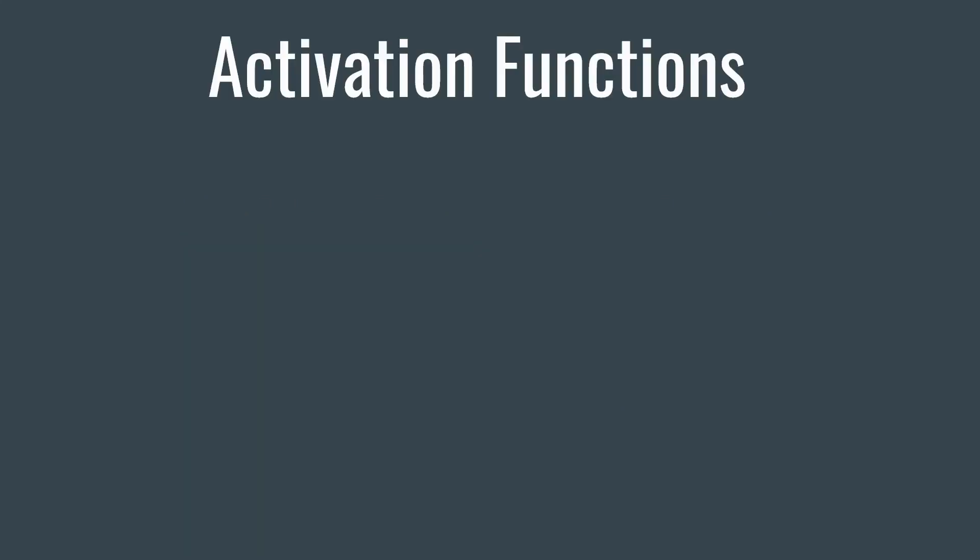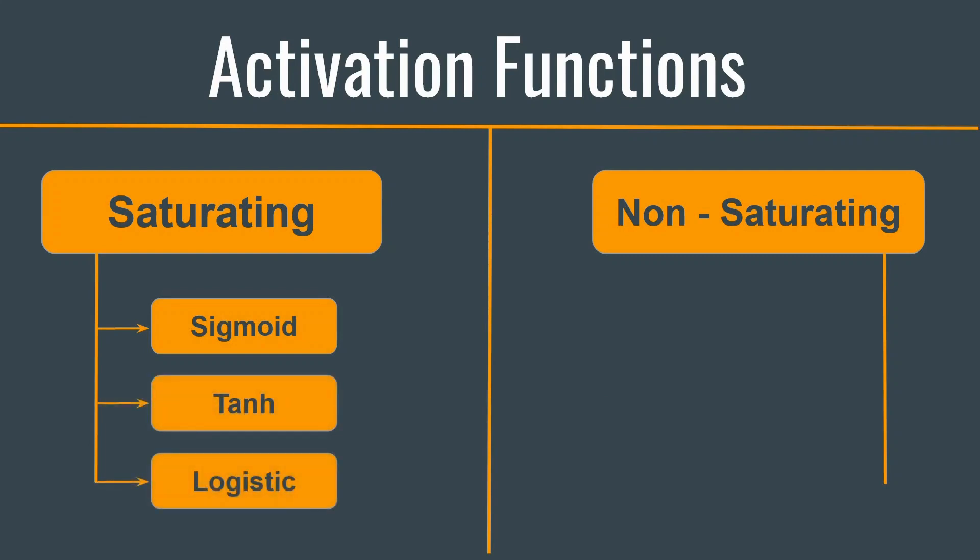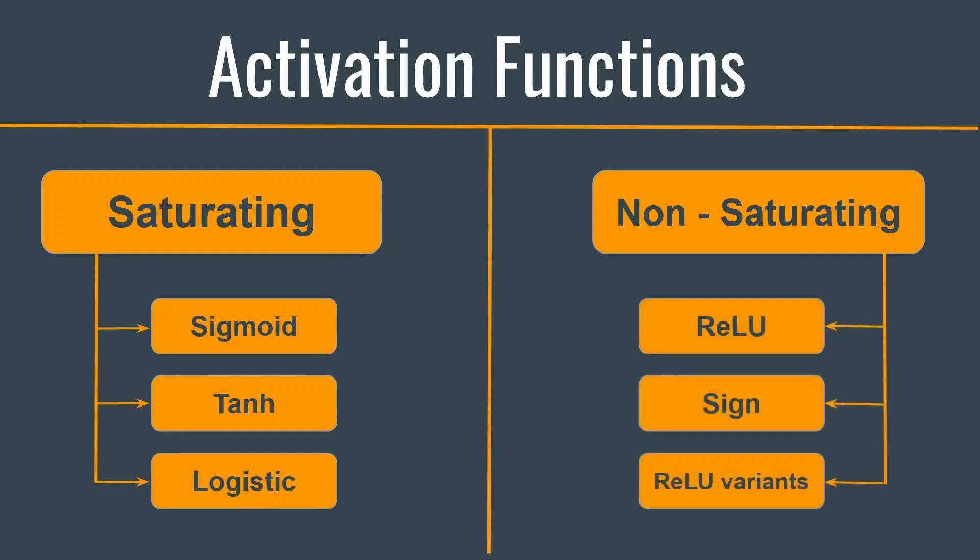There are generally two types of activation functions: the saturating activation function and the non-saturating activation functions. Some examples of saturating activation functions are the sigmoid activation function, the tanh activation function, or the logistic activation function. Whereas ReLU, sine, and other variants of ReLU belong to the non-saturating functions. Saturating functions are those functions whose values saturate as they approach the limits. Now, this is something mathematical but you don't have to worry about it.